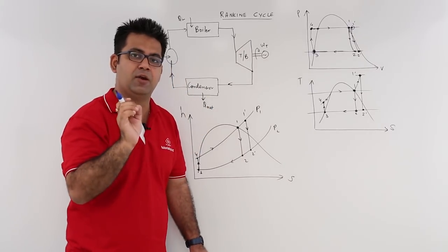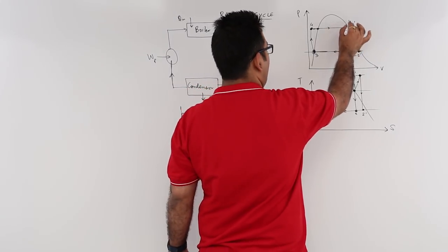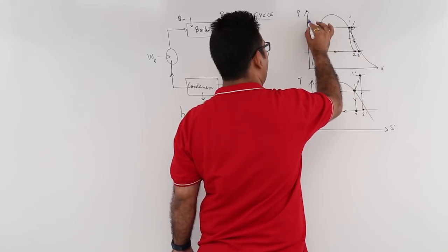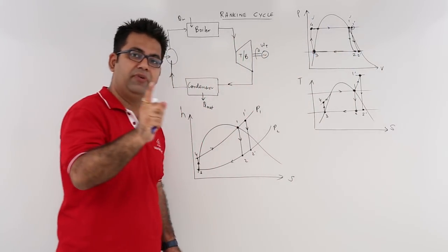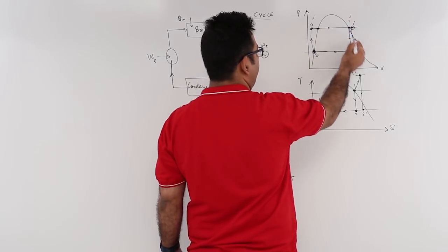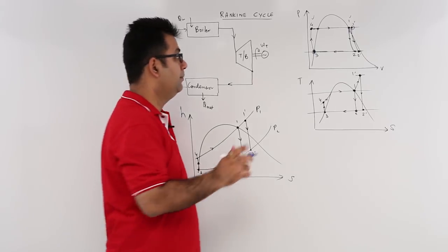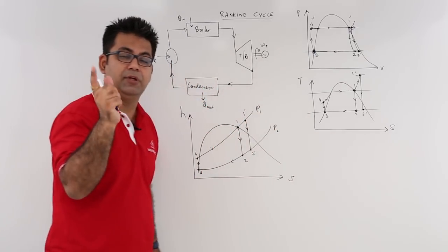If you remember the Carnot cycle, your point 1 and point 4 both were at saturated conditions. So 1 was saturated vapor and 4 was saturated liquid. But it was a hypothetical cycle.